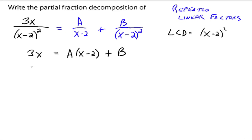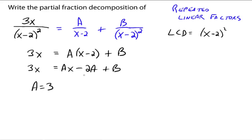Distribute A through and you get: 3x equals Ax minus 2A plus B. Then equate coefficients. The coefficient for x on the right is A, and on the left is 3, so A equals 3. The constant term on the right is negative 2A plus B — don't forget it's negative 2A — and that has to equal the constant term on the left, which is zero.